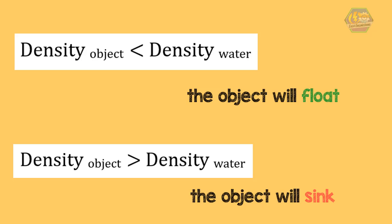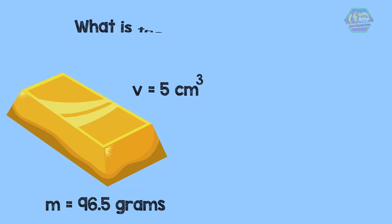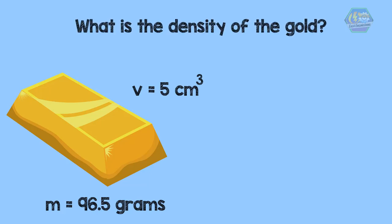Now let's try solving problems related to density. Suppose you have 96.5 grams of gold and has a volume of 5 cm³. What is the density of the gold?